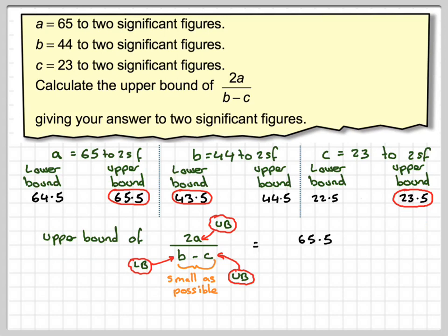So putting the numbers in, we're going to do, so we need to do 2 times the upper bound, and then do the lower bound here, 43.5, minus the upper bound here, which is 23.5.